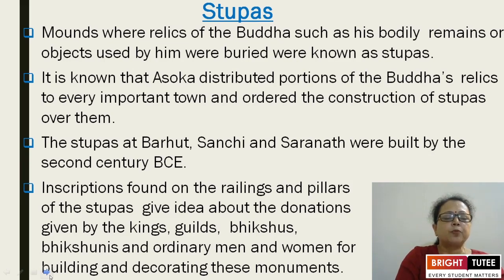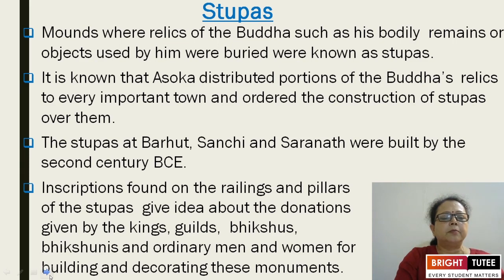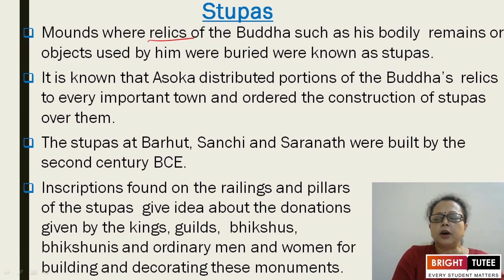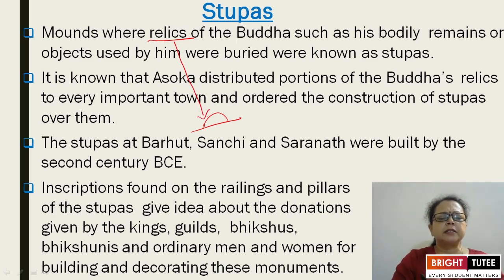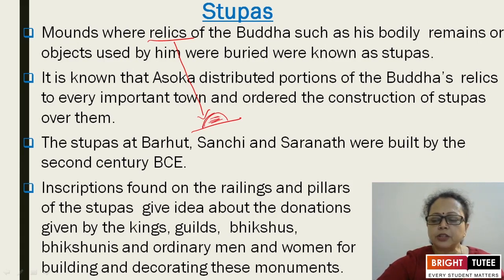Coming to discuss about stupas — what were stupas? Mounds over relics of the Buddha, such as his bodily remains. Relics means any part of the body or objects used by him that were buried. These were known as stupas. It is a mound-like structure, and inside this, the relics of Buddha — any bodily remains or objects used during his lifetime — are kept inside, engraved inside. This mound-like structure is known as a stupa.